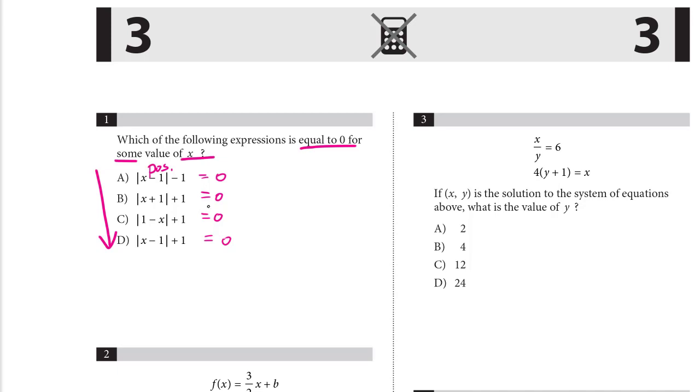So in order to equal zero, I cannot have a positive plus a positive. That will never be zero. The only way I can have zero is if I have a positive minus a positive, like minus one, then zero is possible.